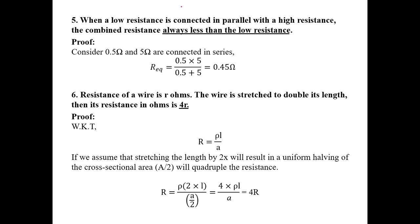Proof: When a low resistance is connected in parallel with a high resistance, the combined resistance is always less than the lower resistance. With R_low equals 0.5 ohm and R_high equals 5 ohm in parallel: R_eq equals (0.5 times 5) divided by (0.5 plus 5), which equals 0.45 ohm — less than the smallest resistor value.